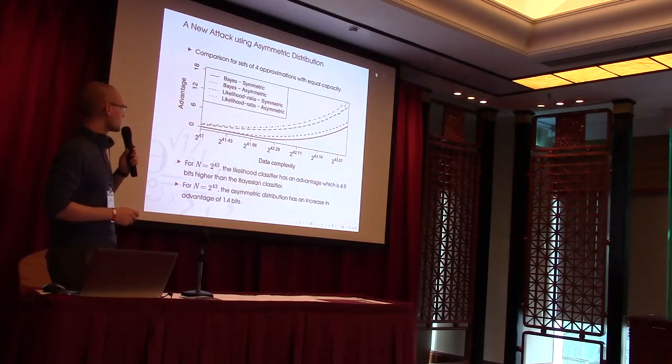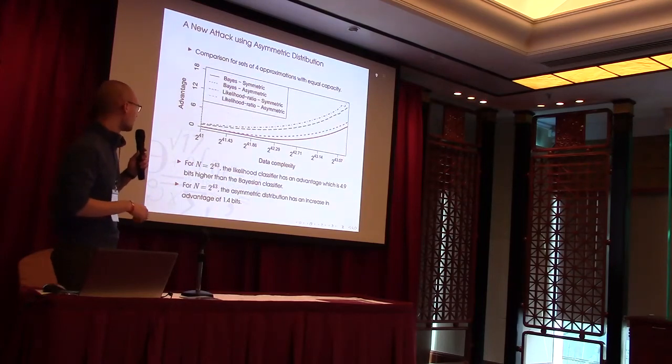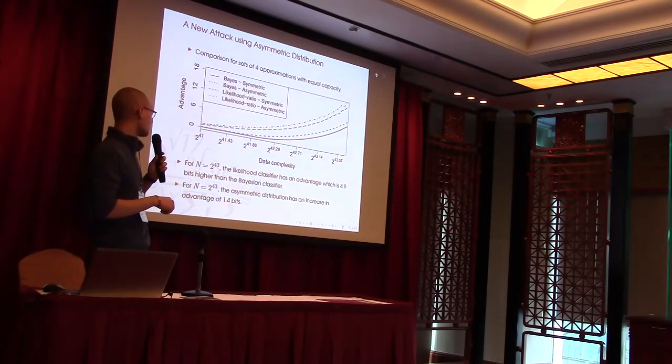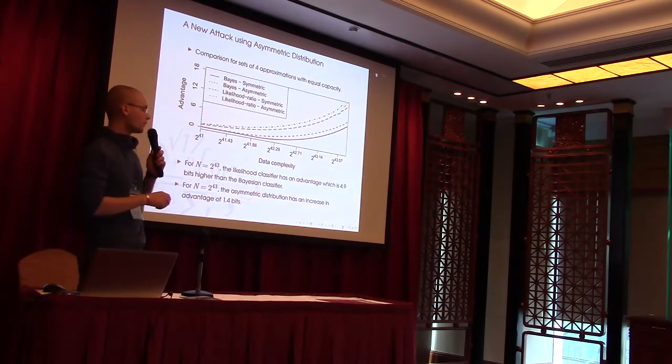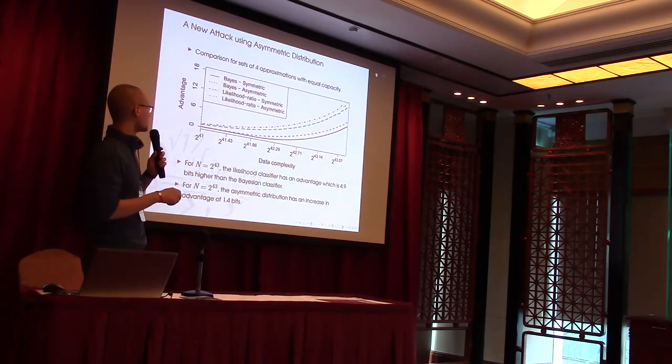Let's see what the effect actually is. We have here data complexity versus advantage. Down here we have the old Bayesian model, and up here we have the likelihood model, our new model. We see for both of them, when we move from symmetric case to an asymmetric distribution, then we get a boost in advantage by one and a half bits or so. And by going from the Bayesian model to the likelihood model, we get something like five bits higher advantage. So both of these things kind of help us out.